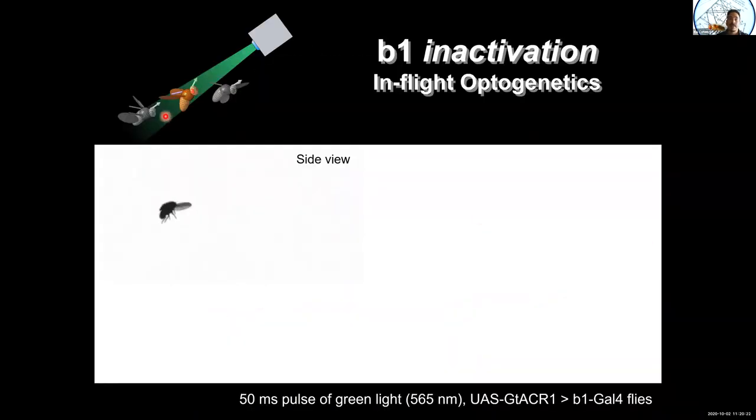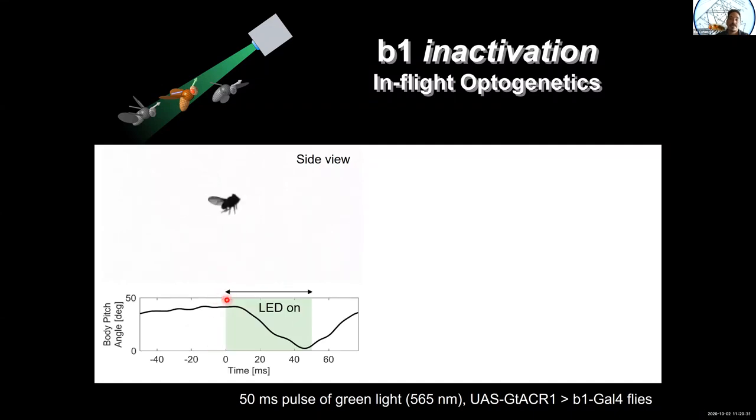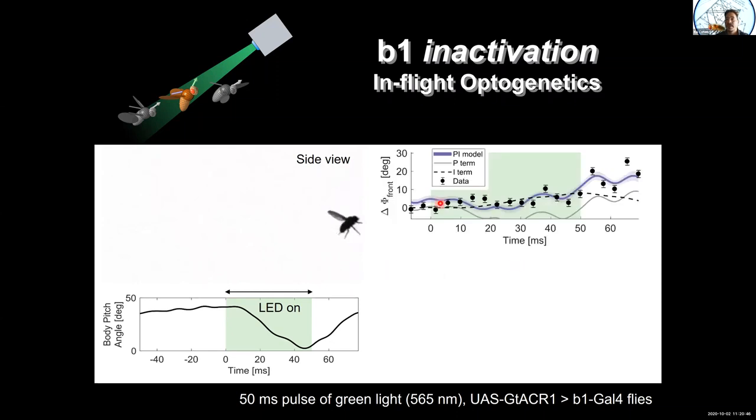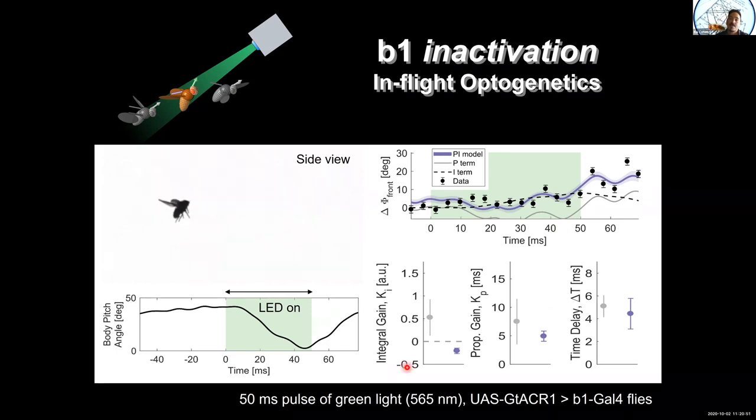So what do we see when we do that? Well, if I have a fly that's coming in, it's been normal its whole life. And then all of a sudden we shine a green light on it. In that particular case, what we find is that when the LED is on the fly's pitch starts to go lower and lower. So if the pitch angle used to be around 45, now you can see the pitch is getting much lower. When we turn the LED off right around here, the pitch recovers. And if we apply a controller model, what we find is that in this particular case, the integral gain for the controller has gone away, whereas the proportional gain and the time delay look like they're relatively unaffected.